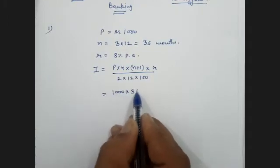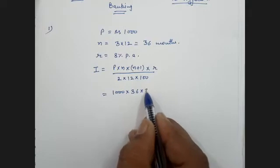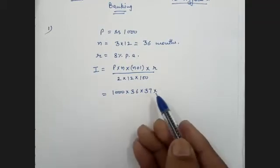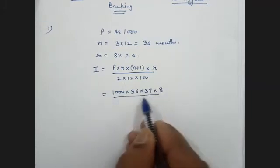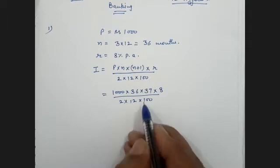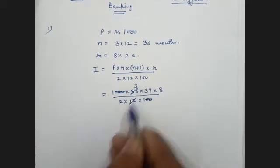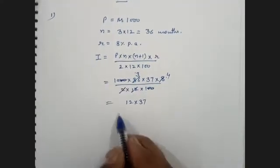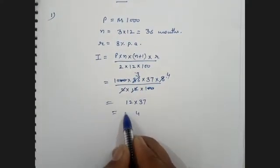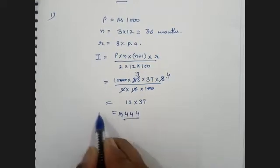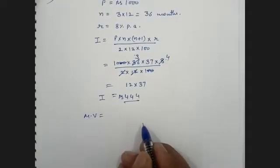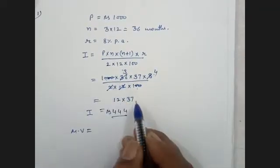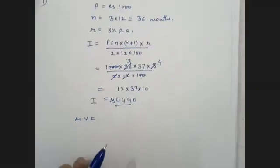Calculating: 1000 into 36 into 37 into 8, upon 2 into 12 into 100. Simplifying: 12 into 37 = 444. Twos are cancelled. The interest comes out to ₹444.